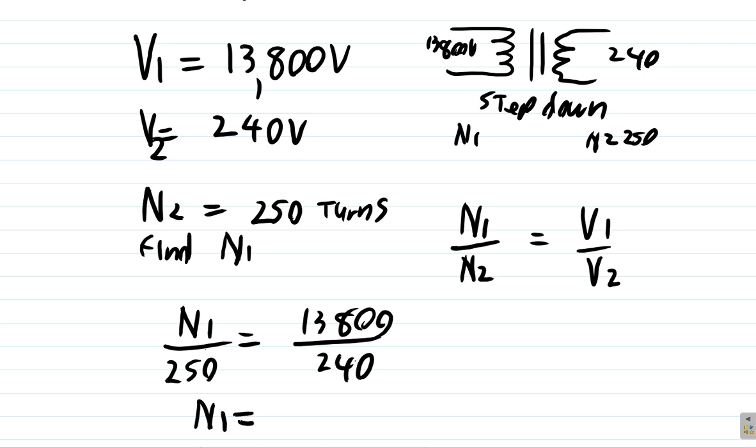N1 is the number of turns on the primary side. Of course, you expect that there will be more turns on the primary than the secondary. If you had the same number of turns on the primary and secondary, the same voltage that you apply to the primary would appear across the terminals of the secondary.